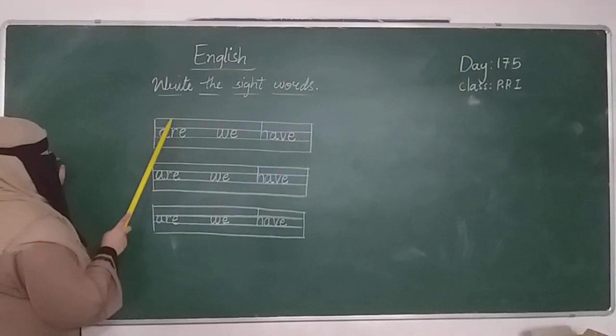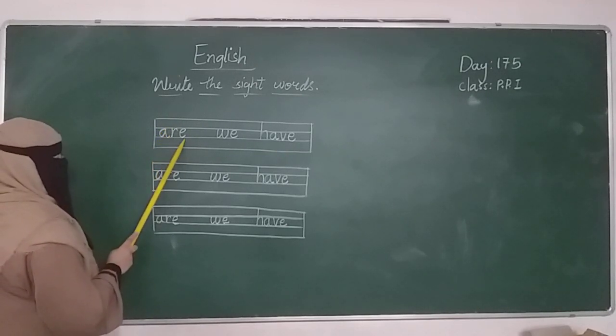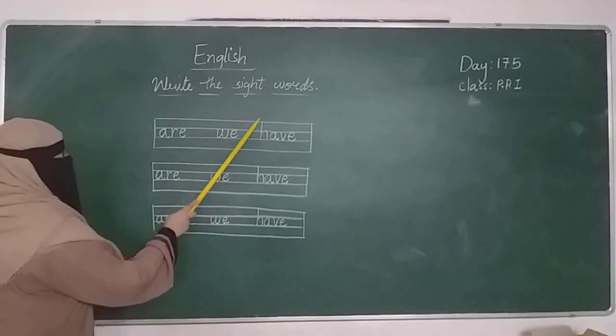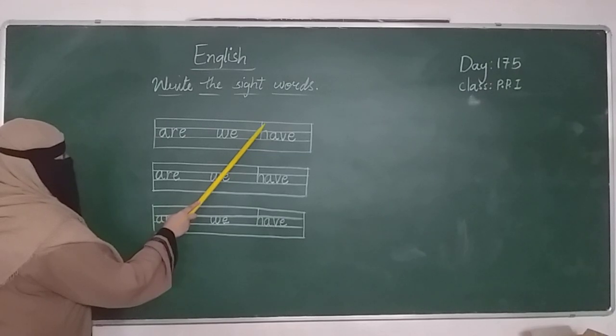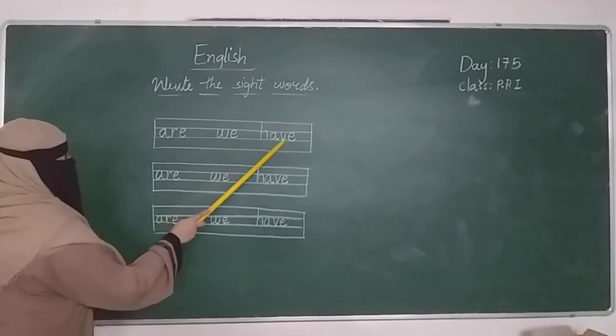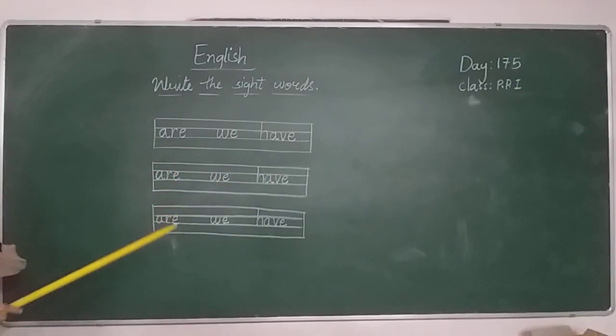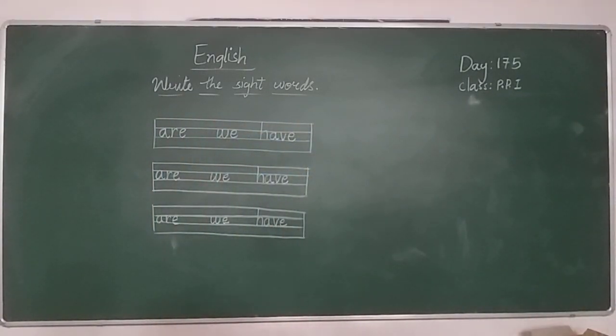These three sight words you have to write in the homework also children. The same how teacher is touching the lines. See here these two lines - in these two lines I have written are. And in these two lines I have written we. And in these three lines you can see the letter H I am touching from this upper line. H, A, V, E - have. The same you have to write the whole page in your homework. Do it and send it to me. Learn and write. What you have to do? You have to learn and write.